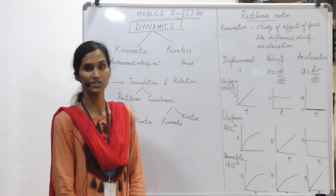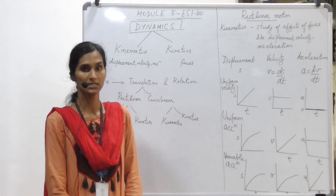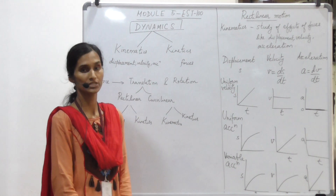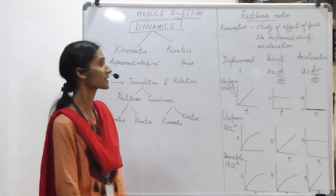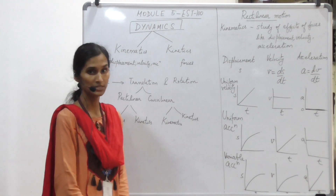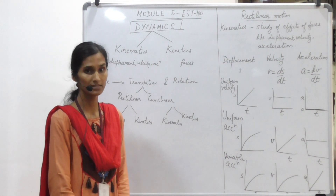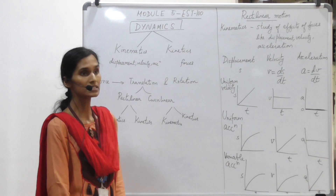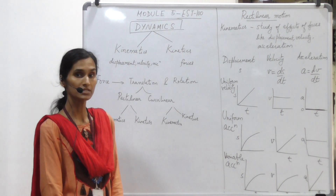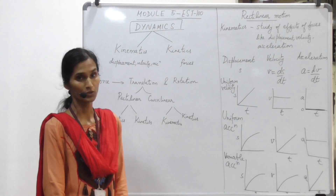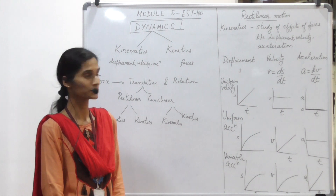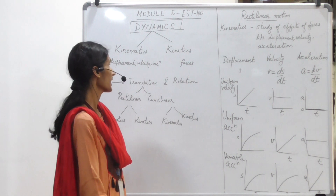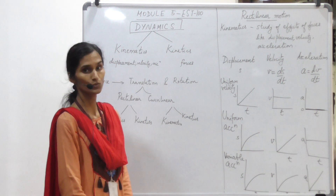Dynamics has two branches: kinematics and kinetics. Kinematics is the branch of dynamics which deals with the effects of the forces acting on the object — by effects I mean the displacement, the velocity, and the acceleration caused by the forces acting on the body. Kinetics is the branch of dynamics which deals with the forces acting on the body because of its motion — the forces which cause motion in the object — and kinetics deals with the study of those forces.